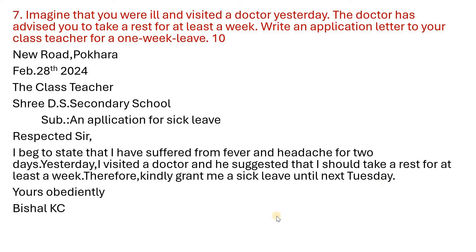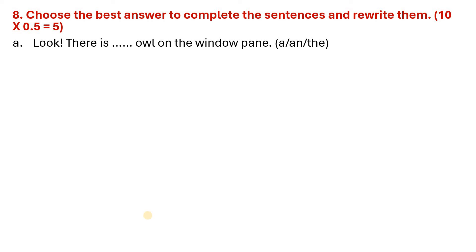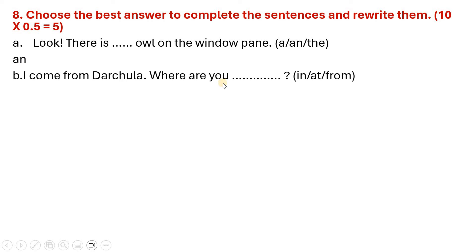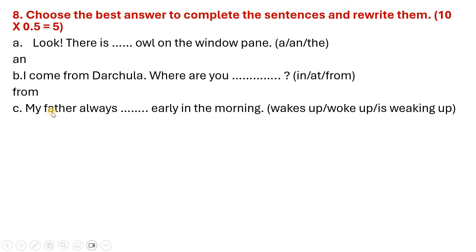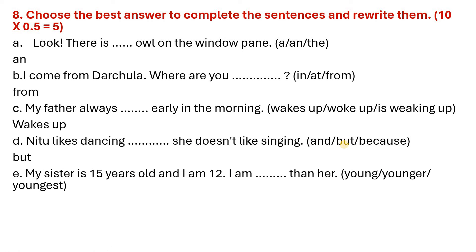Question 8: Choose the best answer to complete the sentences and rewrite them. Answers: I come from Darchula — where are you from? My father always wakes up early. Nitu likes dancing but she doesn't like singing. My sister is 15 years old — I am younger than my sister.